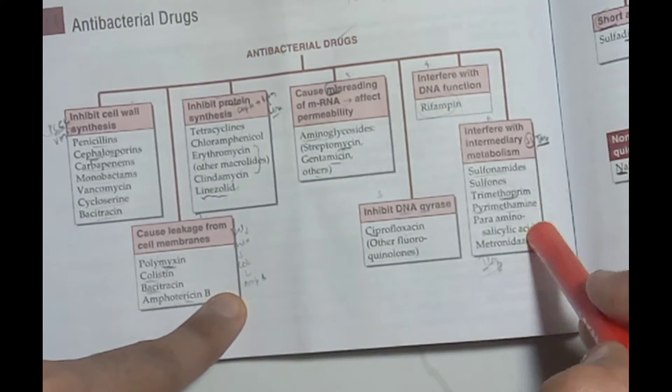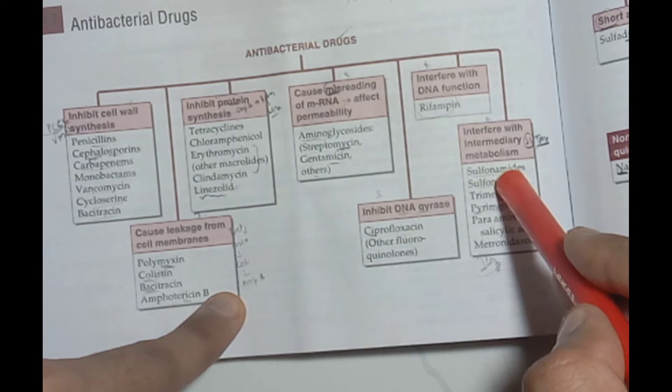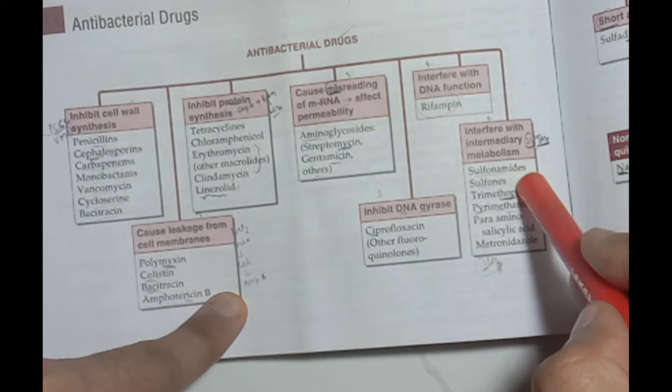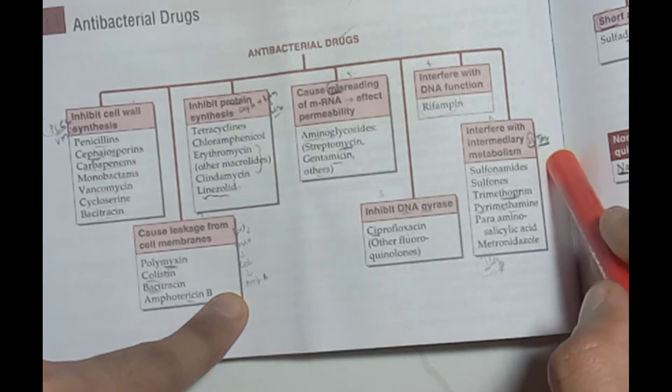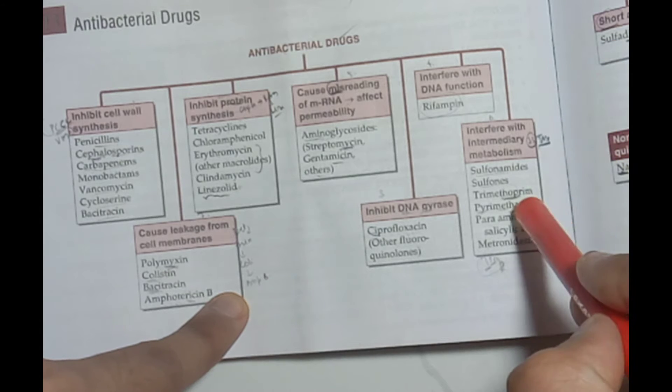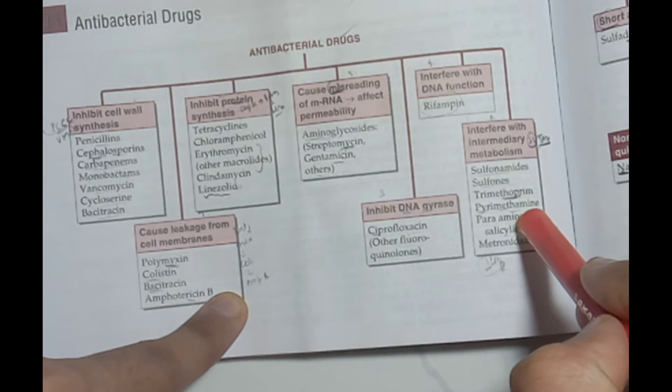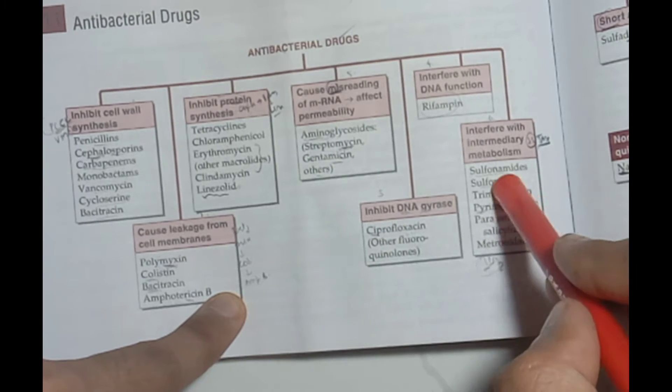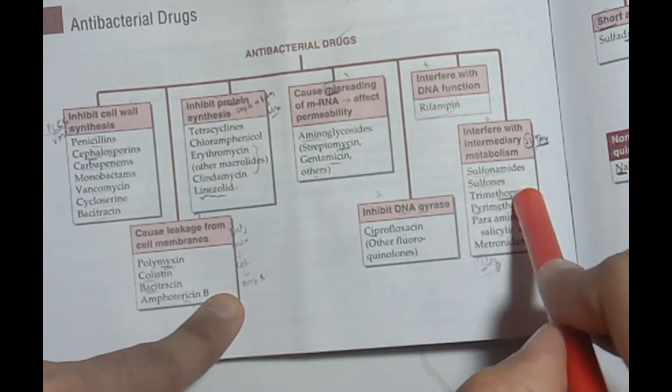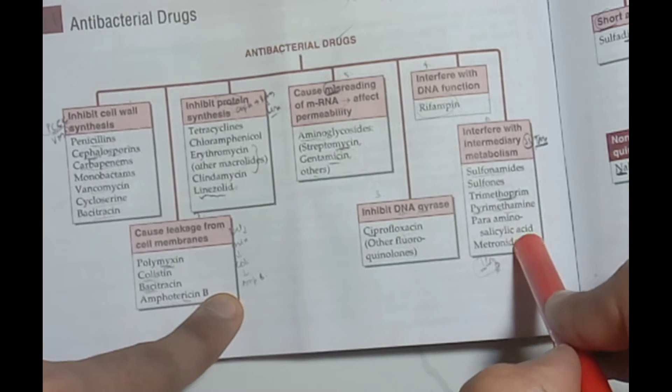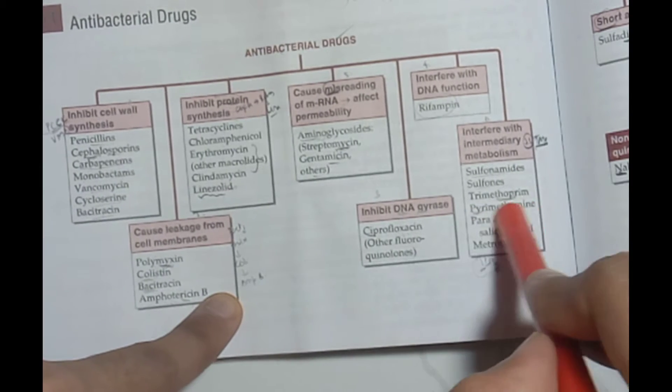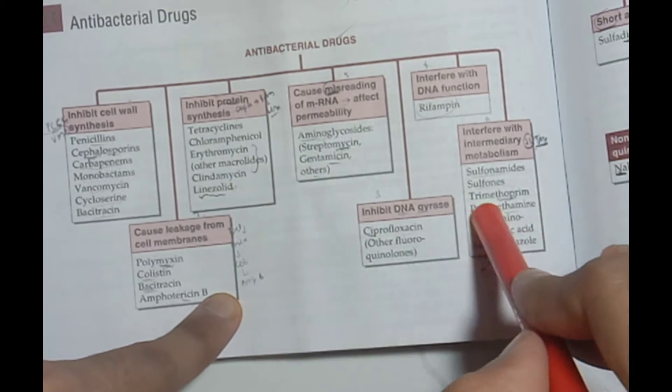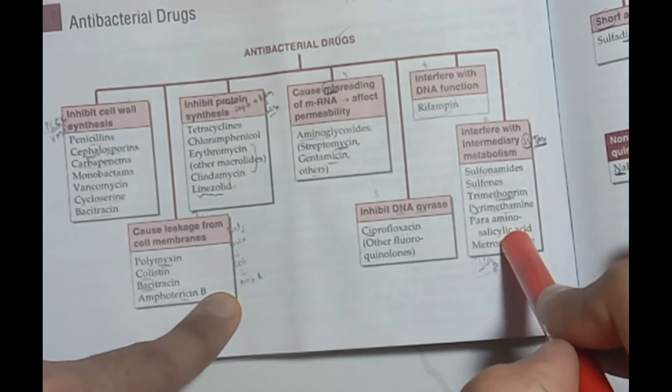Intermediary metabolism inhibitors: double S for Sulfonamides and Sulphones, then TMP. Trimethoprim - remember, 3 cells: Pirate is going to go to Metro, and there is one person who gets a cycle. So Trimethoprim, T-M-P: Trimethoprim, Metronidazole, Pyrimethamin, and Para-aminosalicylic acid.